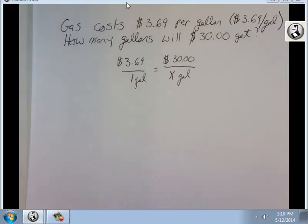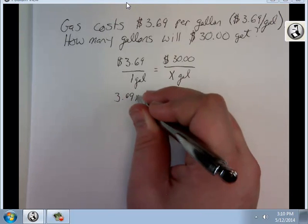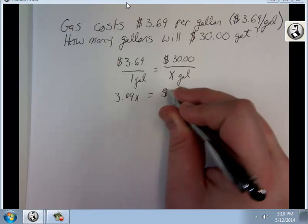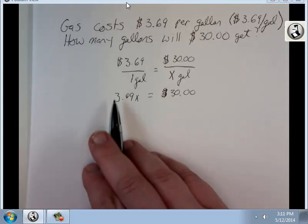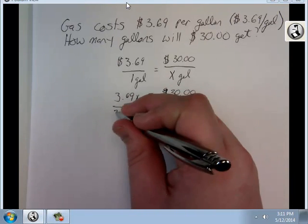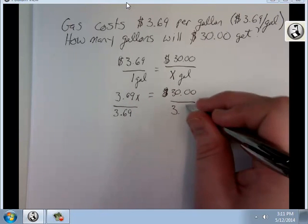Same process as before. I'm going to cross multiply. 3.69x equals $30. Now, how do I solve for x? Well, since it's being multiplied by something here, I have to divide by that value. Divide by 3.69 to each side. I get x equals...